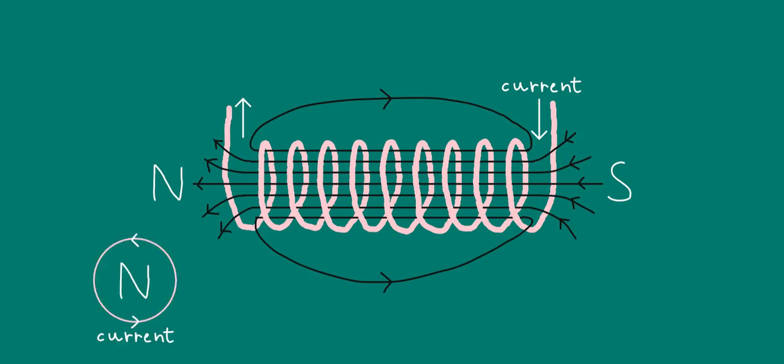The current is flowing anti-clockwise. The N is capitalized and I stressed it because this end of the solenoid would behave like a magnetic north pole.